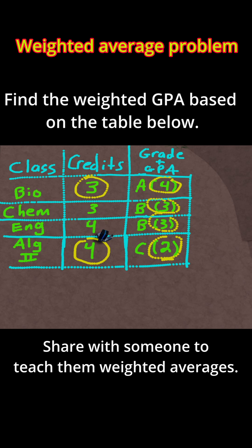Let's do this. I'm just going to go row by row. For Bio, we'll have three credits times a GPA of 4 because they got an A, plus for chemistry, three credits times a GPA of 3 because it got a B, plus four times three for English, plus four times two for Algebra 2.